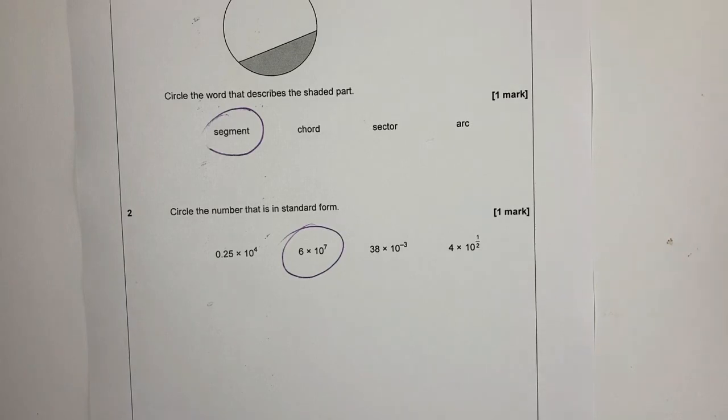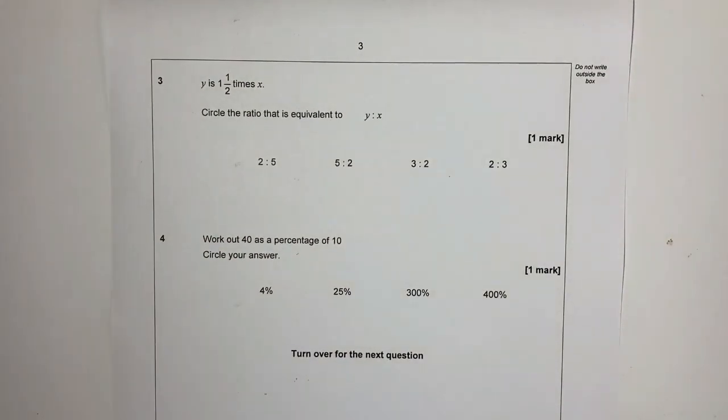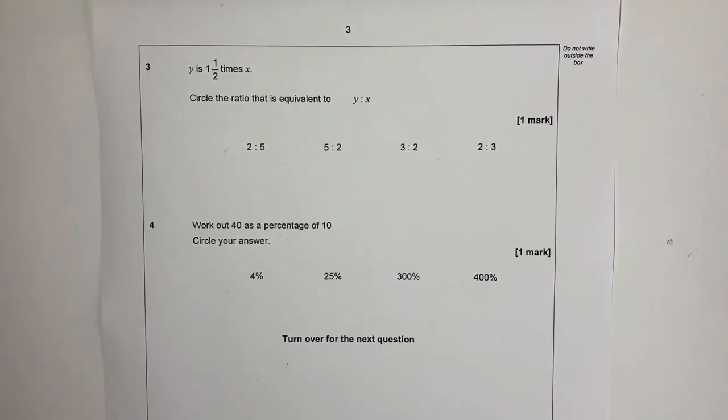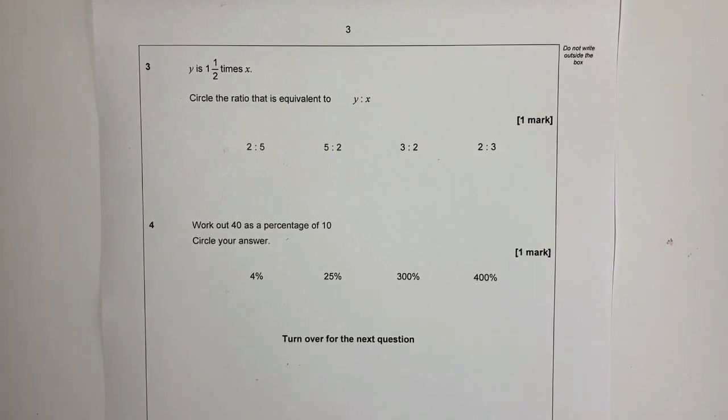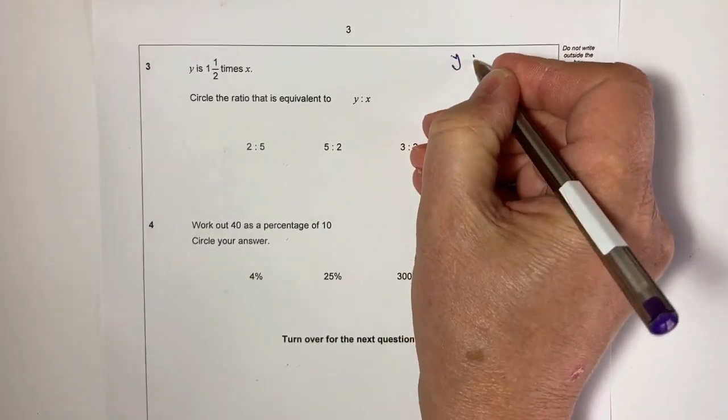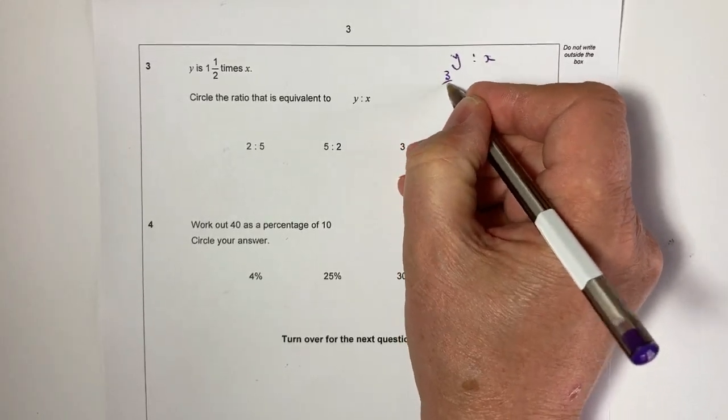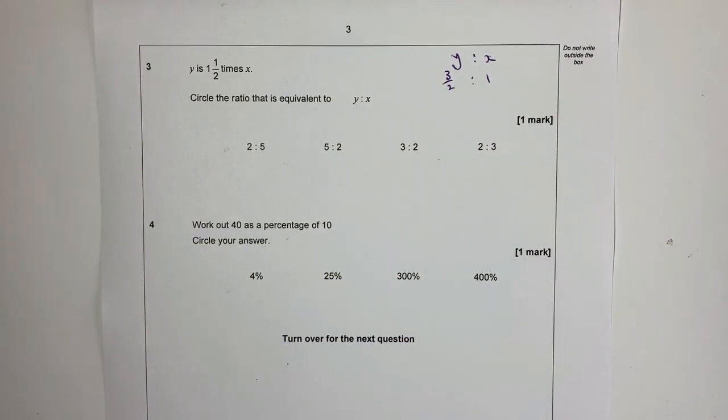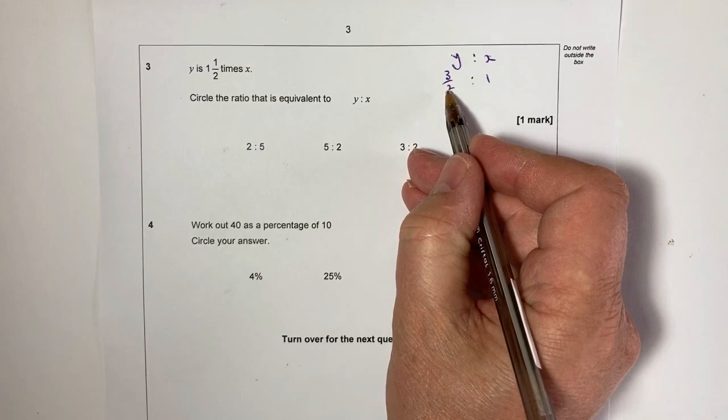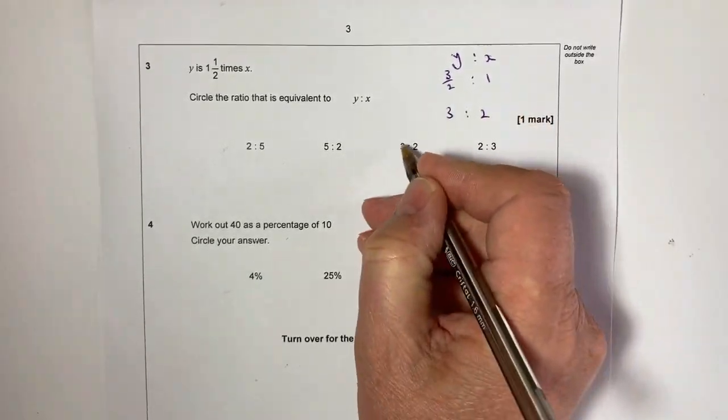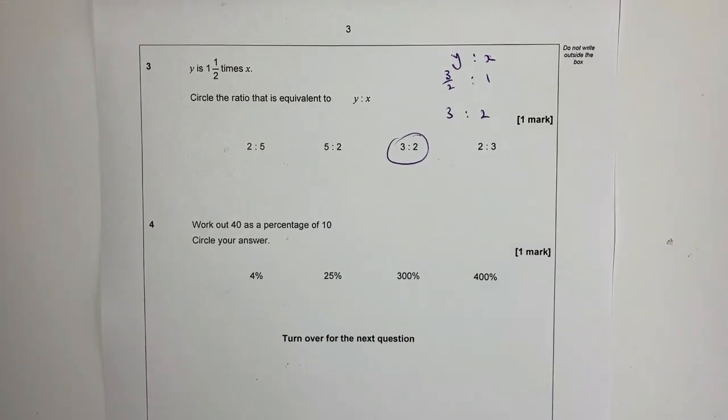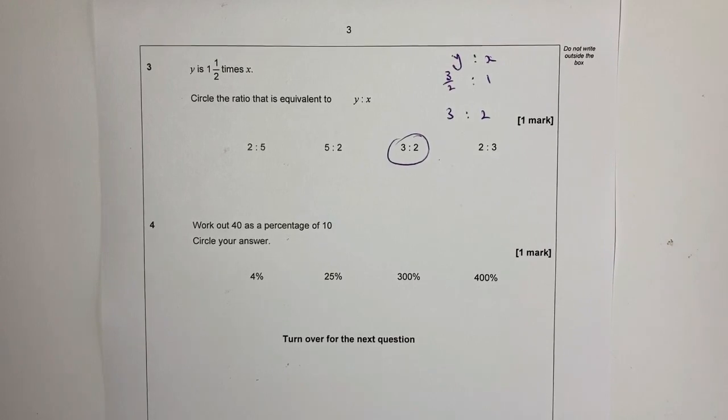Let's have a look at question number three. It's a bit of a tricky one really. It says that y is one and a half times x, circle the ratio that is equivalent to y to x. So we could write this as y to x, and if it's one and a half times, I can write that as three over two to one. So three over two is the fractional equivalent of one and a half times. If I multiply both sides of the ratio by two, I can lose this denominator. So I'm going to get three to two, and it's actually going to be this one here.